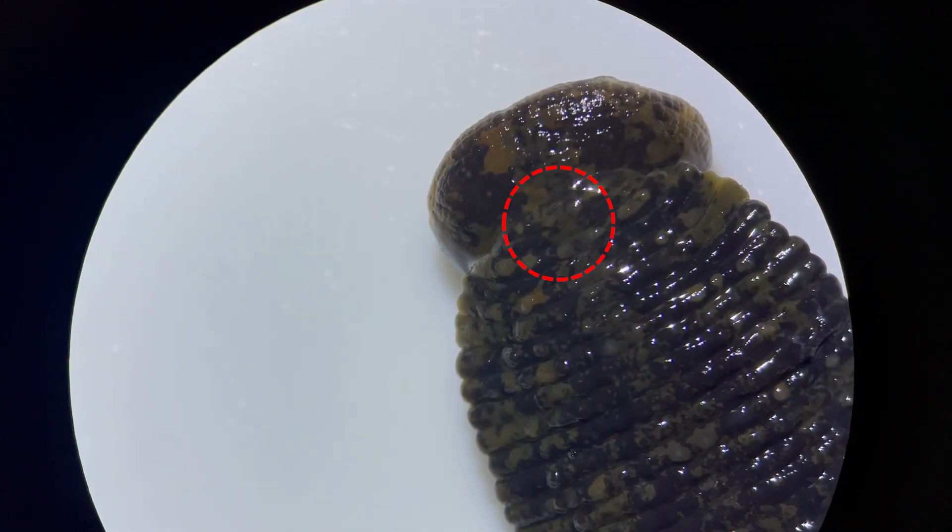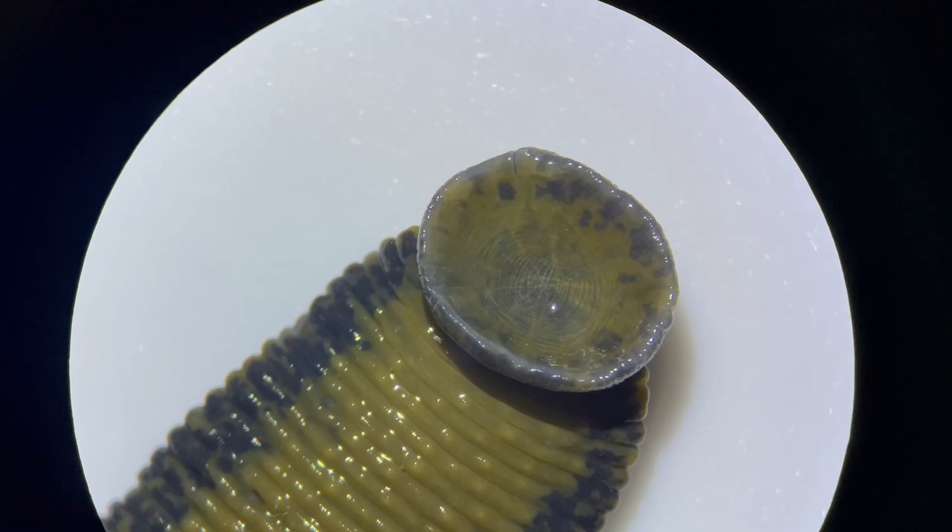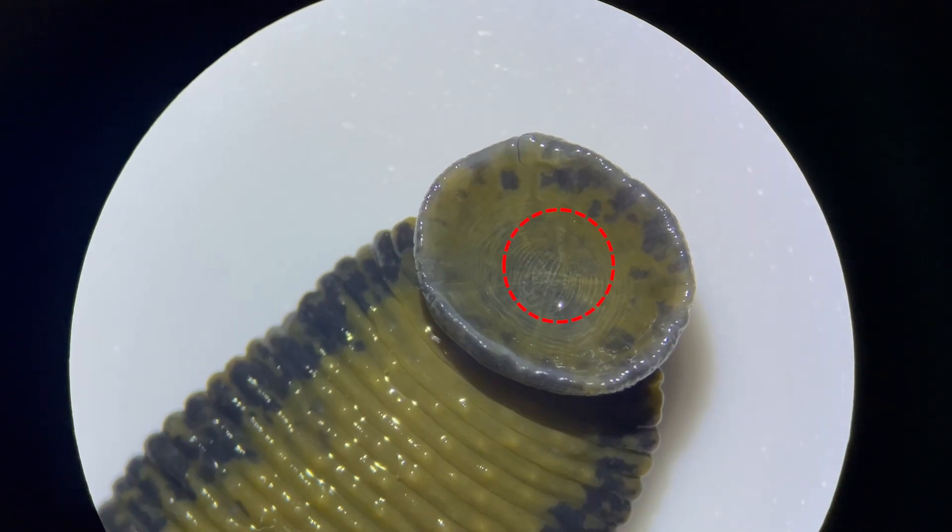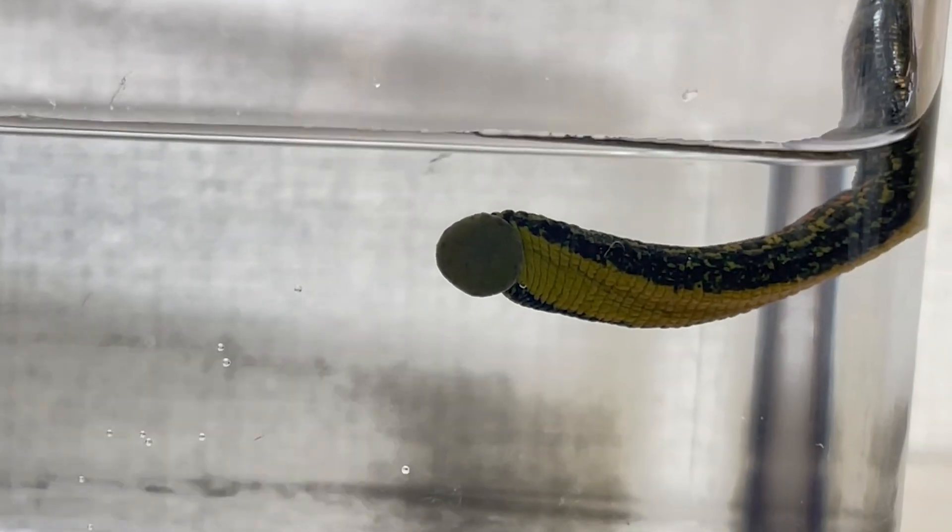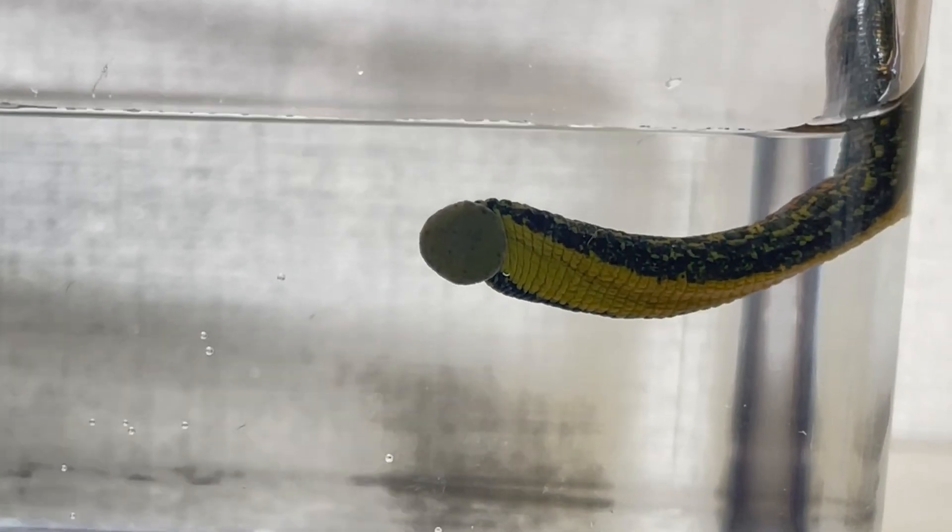The anus is located above the posterior sucker. Since the suckers are usually attached somewhere, the central area of the sucker is not an ideal location for excretion.